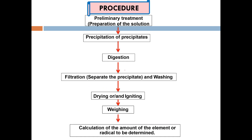The procedure for gravimetry analysis starts with preliminary treatment — the preparation of the solution. Before starting gravimetry analysis, you need to prepare the solution and make sure the conditions are acceptable for that analyte. Next is precipitating or precipitation of the precipitate, then the digestion process, then filtering the precipitate to separate it, then washing it, then drying or igniting the precipitate, then weighing it, and finally the calculation of the amount of precipitate.